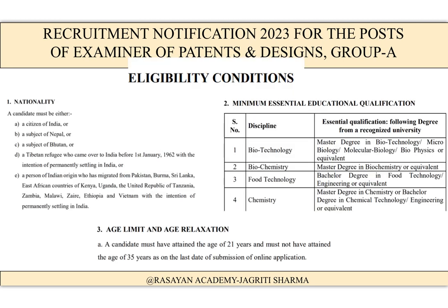Moving on to the eligibility conditions — first we talk about nationality, then minimum essential education qualification, and then age limit. The candidate must be a citizen of India, Nepal, or Bhutan, or a Tibetan refugee who came to India before 1st January 1962 and intends to permanently settle in India, or a person of Indian origin who has migrated from those countries with an intention of permanently settling in India.